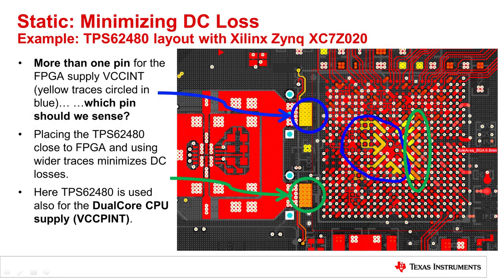This is a typical example where the DC losses problem has been properly addressed. The Xilinx Zynq 7000 series has more than one pin for the VCCINT and VCCPINT voltage rails, so the question is which pin to sense and how to reach the inner BGA pins. The TPS62480 — a dual-phase buck converter with 6A maximum output current — has been placed as close as possible to the FPGA using wider traces to minimize DC losses. This was possible because the power distribution was implemented through discrete devices, one for each or two voltage rails.